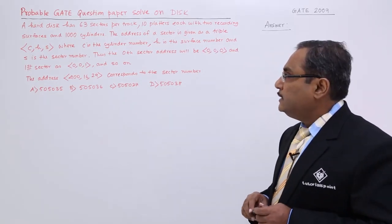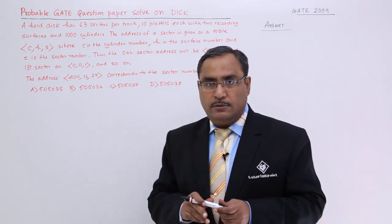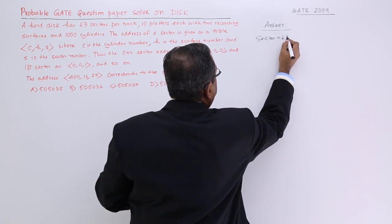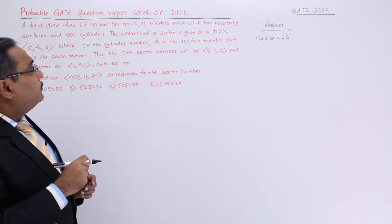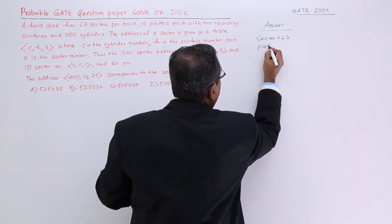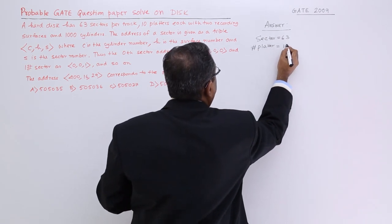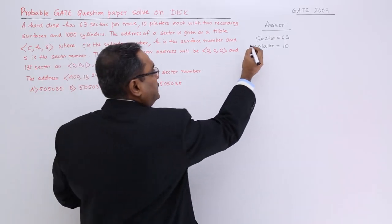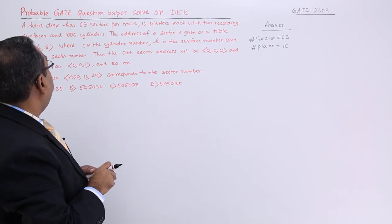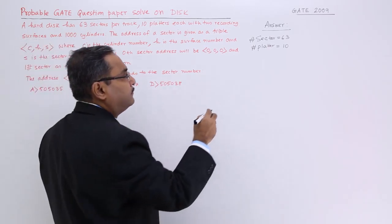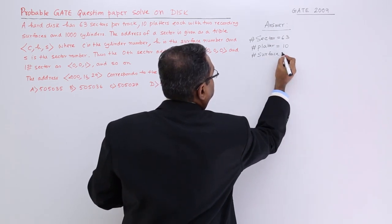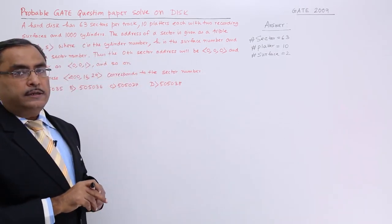In this particular problem, a hard disk has 63 sectors per track, 10 platters, and two recording surfaces per platter. So number of sectors per track is 63, number of platters is 10, and surface per platter is 2.